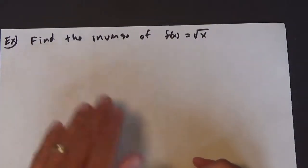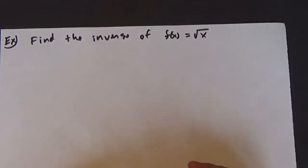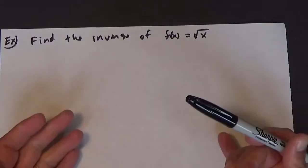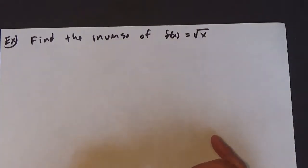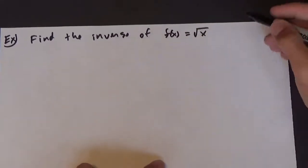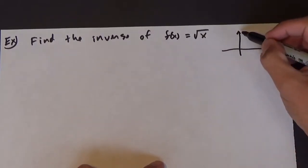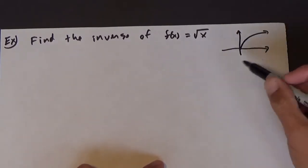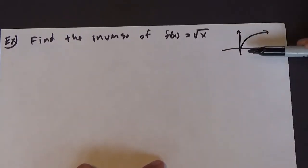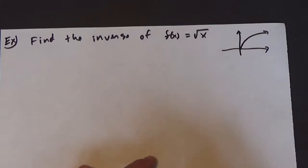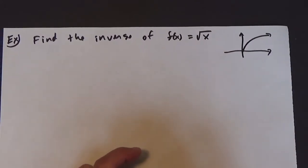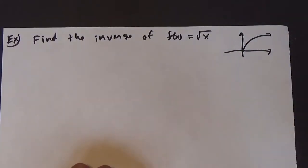We're going to start by finding the inverse of f(x) = √x. The question is: does it have an inverse? If I sketch it quickly, the square root of x passes the horizontal line test, so it has an inverse because it is one-to-one.